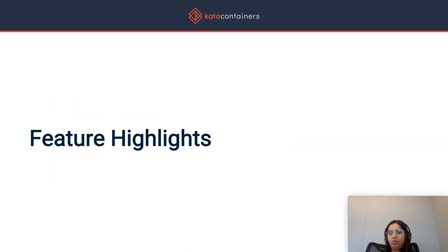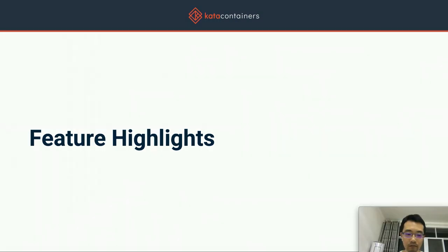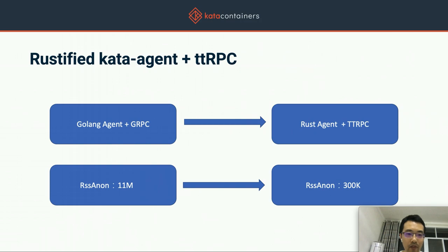With that, I'll hand it over to Tao Peng to talk in detail about some of our key feature highlights. Thank you. Hi everyone, my name is Tao Peng. I'm a staff engineer from Ant Group and also part of the Kata Containers Architecture Committee. During the 2.0 timeframe, we rewrote the Kata Agent in Rust, replacing the communication protocol between the runtime and agent from gRPC to TTRPC. The benefit is obvious — we reduced the RSS of the Kata Agent from 11 megabytes down to 300 kilobytes.